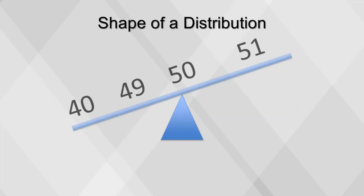We can transform this sequence into a negatively skewed distribution by adding a value far below the mean: 40, 49, 50, 51. This produces a left skew.